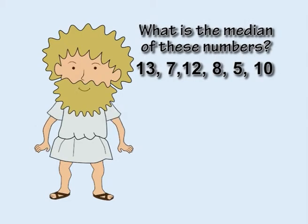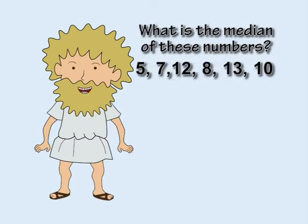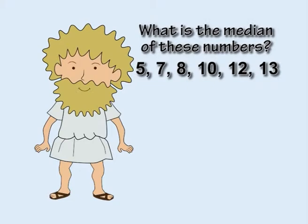For example, let's find the median of these numbers. The first thing to do is to sort them by order of value. Five is the smallest number, then comes seven, eight, ten, twelve and thirteen.